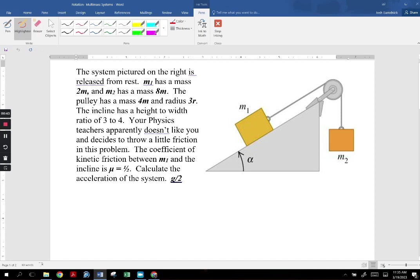So let's start. I'm going to draw a little free body diagram here. We've got FT, and I'm going to call this FT1, not just FT. We've got the normal force, FG in the Y, FG in the X, and it says that your teacher doesn't like you, so your teacher put friction in there.